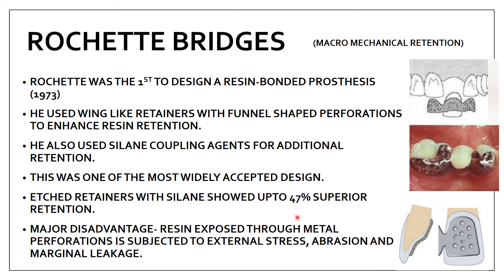The major disadvantage of the Rochette bridge is that the resin exposed through the metal perforation is subjected to external stress, abrasion, and marginal leakage. The enamel is etched, composite resin is applied, and the fixed partial denture with retainer and pontic is placed on the abutment. Through the perforations, the resin becomes exposed to the external surface.